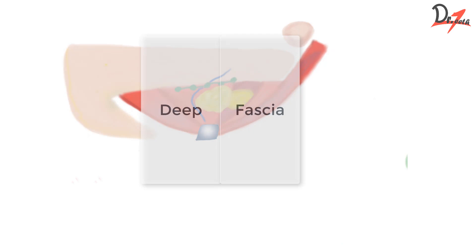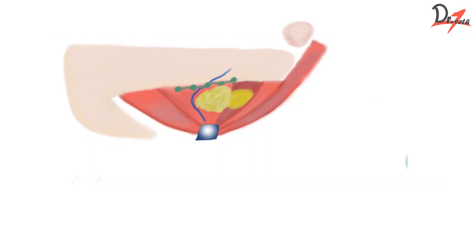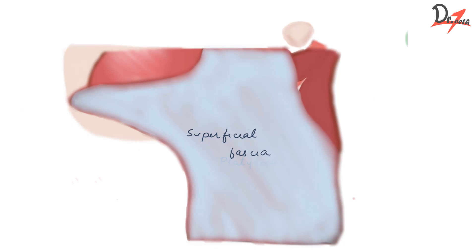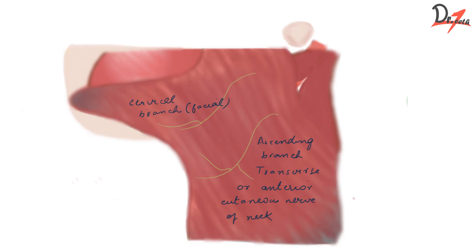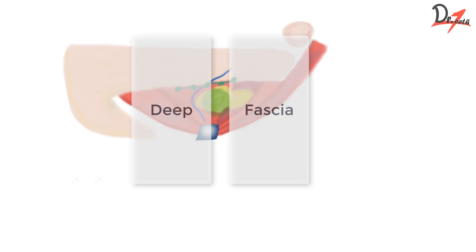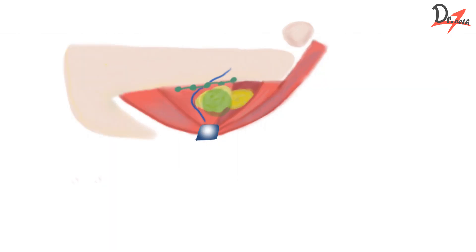Then we have the deep fascia, which splits to enclose the submandibular salivary gland. So all these things we have studied — the skin, the superficial fascia containing the platysma and two nerves (the cervical branch of the facial nerve and the ascending branch of the transverse or anterior cutaneous nerve of the neck), and the deep fascia — together form the roof of the digastric triangle.